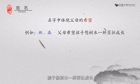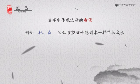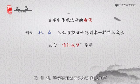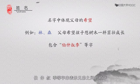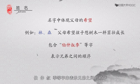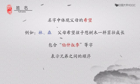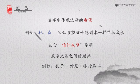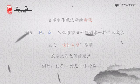中国人取名字以字为单位,一般是两个字到三个字,会在名字中体现出父母的希望。比如叫林、森,表示父母希望孩子像树木一样茁壮成长。除此之外,名字中还可能包含博、仲、书、记等字来表示兄弟之间的顺序。比如孔子的名字就叫仲尼,因为他排行第二。